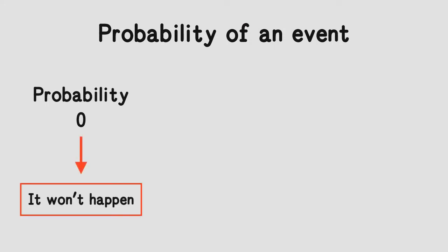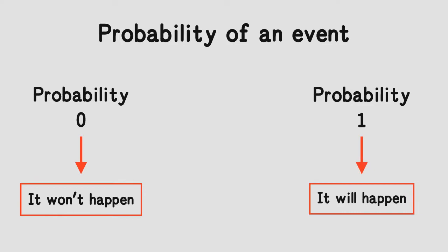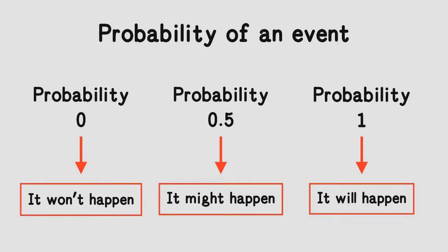We can write the probability of an event as a number between zero and one. A probability of zero means that the event will never happen. A probability of one means that the event will always happen. A probability of 0.5 means that the event is equally likely to happen or not to happen — this is sometimes called a 50/50 chance.